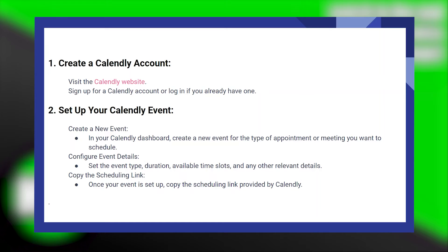First, visit the Calendly website and sign up for a Calendly account, or log in if you already have one. In your Calendly dashboard, create a new event for the type of appointment or meeting you want to schedule. Set the event type, duration, available time slots, and any other relevant details. Once your event is set up, copy the scheduling link provided by Calendly.